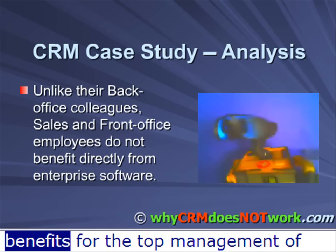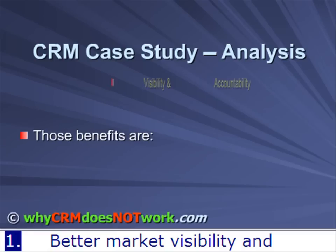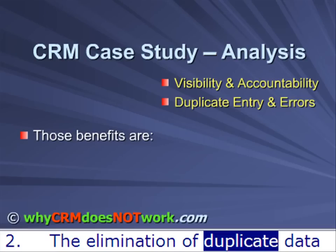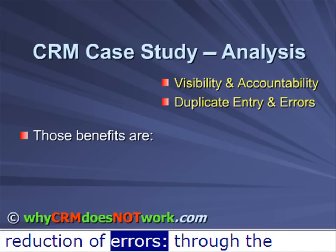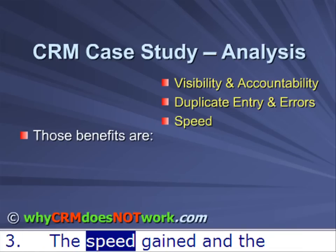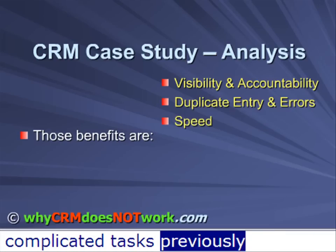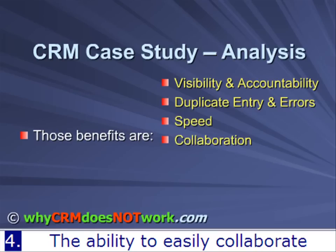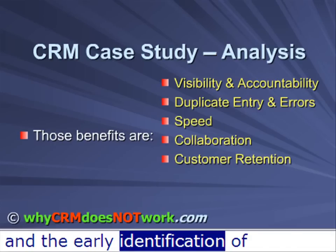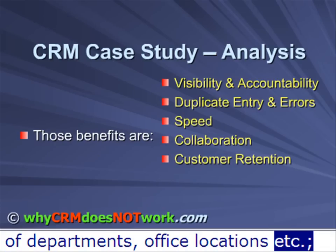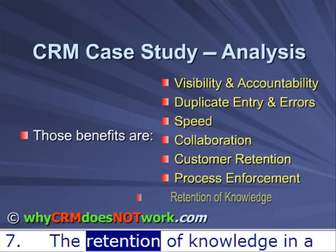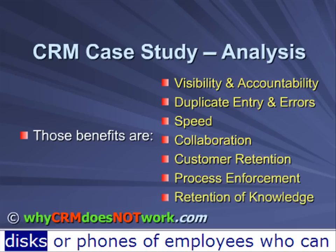Most of the new benefits that CRM brings are benefits for the top management of the company. Those benefits are: 1. Better market visibility and employee accountability through company-wide, real-time record sharing, reporting, and alerts. 2. The elimination of duplicate data entry among employees and departments, and the reduction of errors through the sharing, duplication, and conversion of records — for example, a sales lead becomes a contact, a quote becomes an order. 3. The speed gained and the reduction of errors through automation of repetitive and complicated tasks previously performed manually, such as quoting and expenses. 4. The ability to easily collaborate on processes, records, and documents. 5. The better retention of customers and the early identification of opportunities through the integration of departments and office locations. 6. The enforcement of better business practices through process automation within and across department boundaries. 7. The retention of knowledge in a shared and exhaustive repository rather than simply in the heads, hard disks, or phones of employees who can switch to the competition.